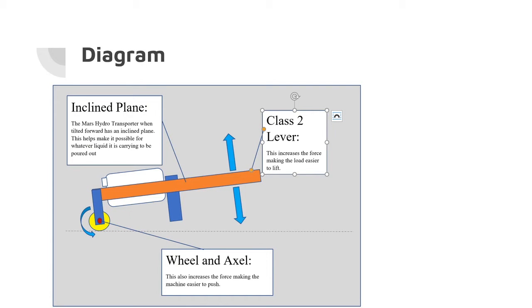The inclined plane comes into use when it is tilted forward to drop out the liquid. When it is tilted forward, it becomes an inclined plane, which makes it easier for the liquid to be poured out.